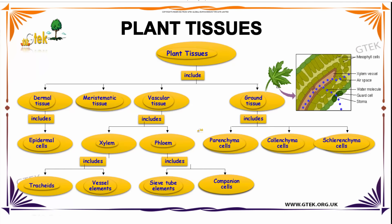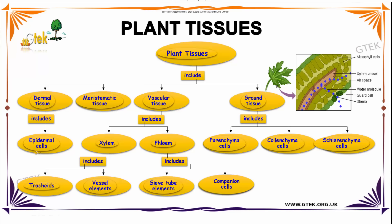Now we are going to see about plant tissues. Plant tissue includes four types: Dermal tissue, Meristematic tissue, Vascular tissue, and Ground tissue. In Dermal tissue it includes Epidermal cell and Meristematic which is single.